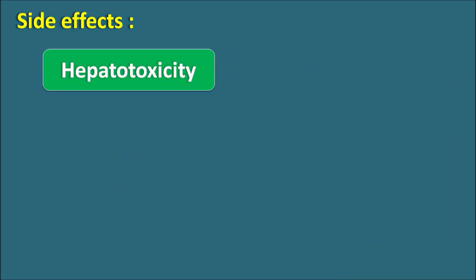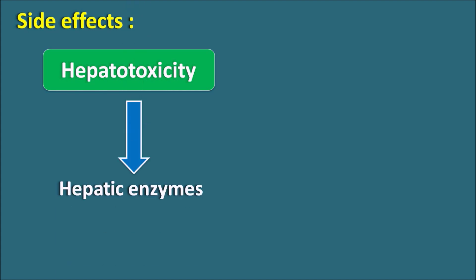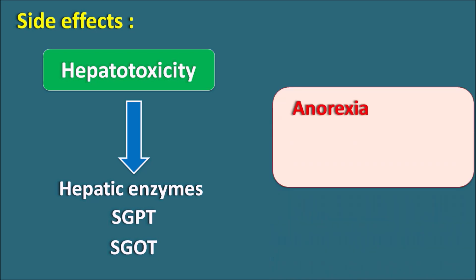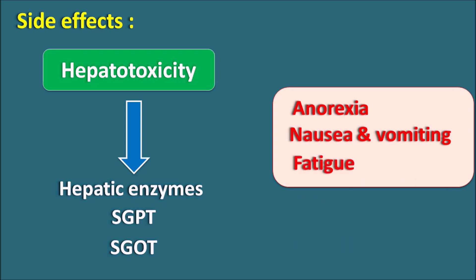The second important side effect is hepatotoxicity. Whenever isoniazid is given for the treatment of tuberculosis, it can increase hepatic enzymes — it elevates SGPT and SGOT levels and can also increase bilirubin levels in the urine and plasma. Apart from these, symptoms resembling hepatotoxicity such as anorexia, loss of appetite, nausea, vomiting, fatigue, and malaise can also be observed.